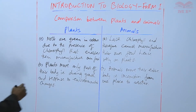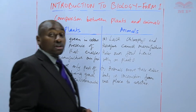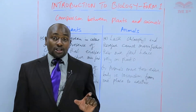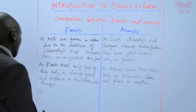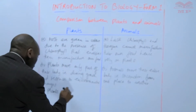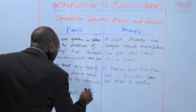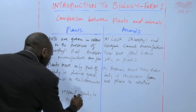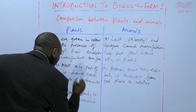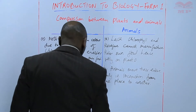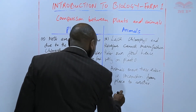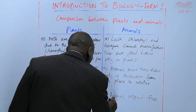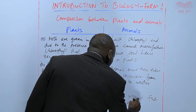Another difference is that when plants respond to the environment, they respond slowly. Animals, on the other hand, respond very fast to any change that takes place in the environment.